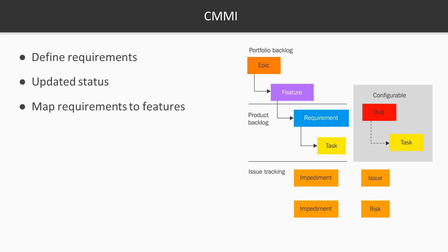You can do a lot of the same things on the backlog in TFS with CMMI as with the other two processes. You can map requirements to features and epics to features. It works the same way in many respects — the main difference is the types and number of work items available. Let's go look at CMMI as it's used in TFS.